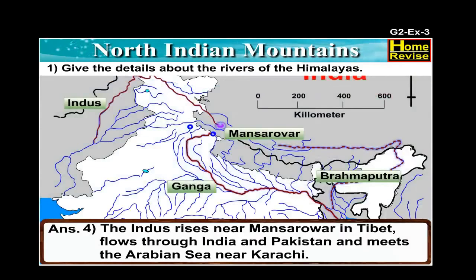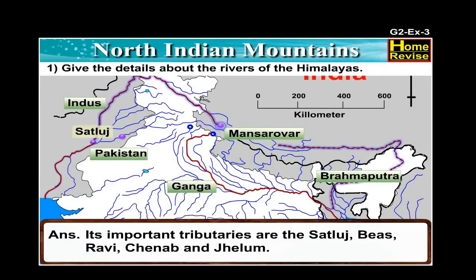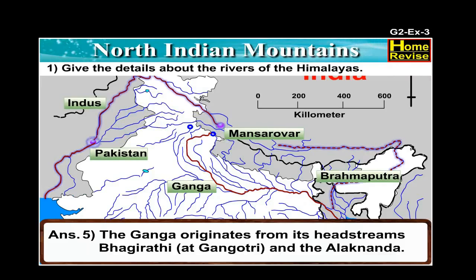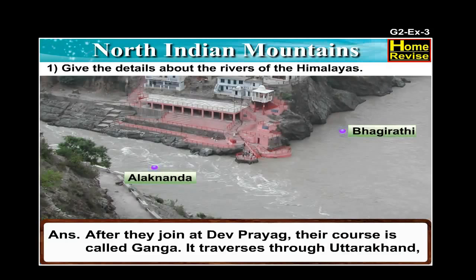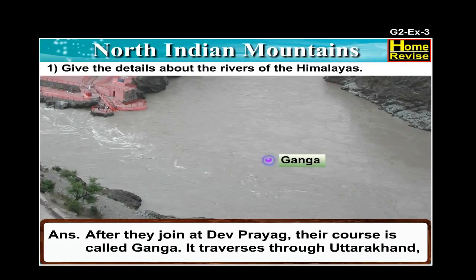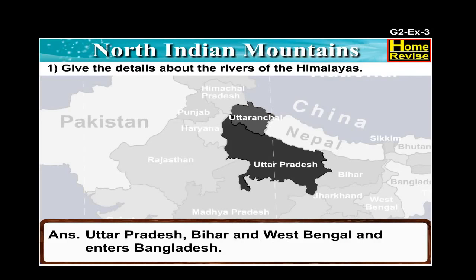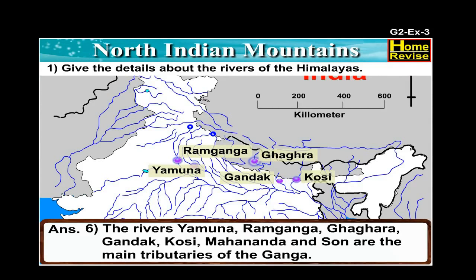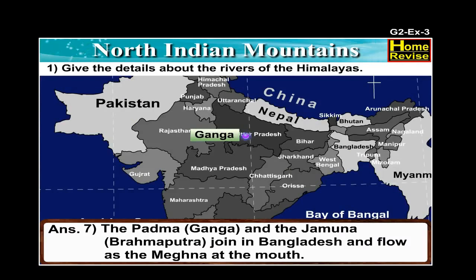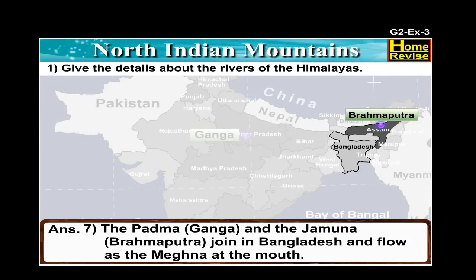The Indus rises near Mansarovar in Tibet, flows through India and Pakistan and meets the Arabian Sea near Karachi. Its important tributaries are the Satlaj, Beas, Ravi, Chenab and Jhelum. The Ganga originates from its head streams Bhagirathi at Gangotri and the Alaknanda. After they join at Dev Prayag, their course is called Ganga. It traverses through Uttarakhand, Uttar Pradesh, Bihar and West Bengal and enters Bangladesh. The main tributaries of the Ganga are Yamuna, Ram Ganga, Ghaghra, Gandak, Kosi, Mahananda and Son. The Padma (Ganga) and the Jamuna (Brahmaputra) join in Bangladesh and flow as the Meghna at the mouth.